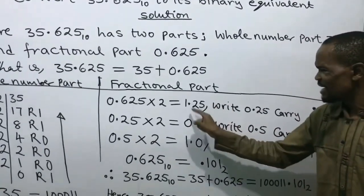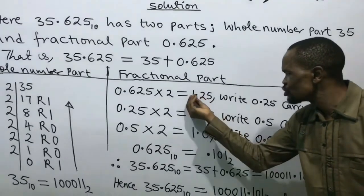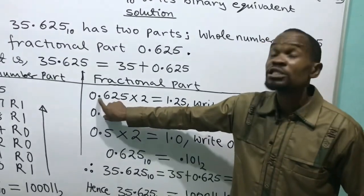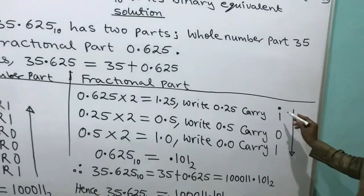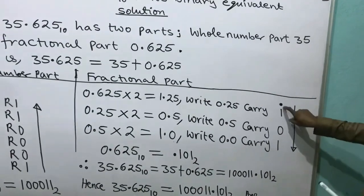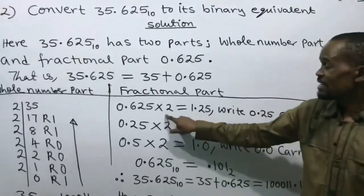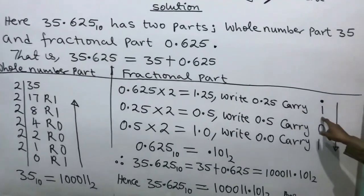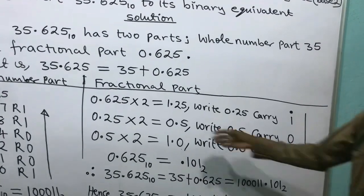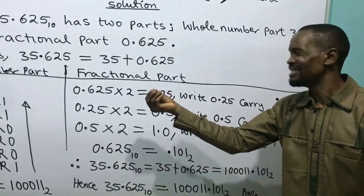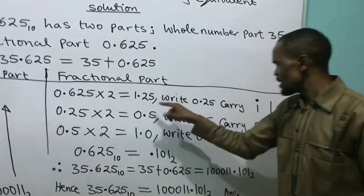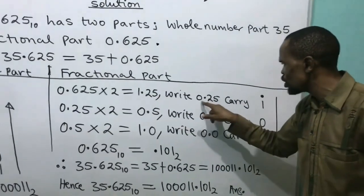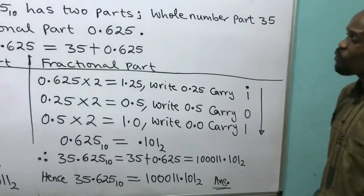That gives me 1.25. What am I interested in? The whole number part, which is 1. Before I take this whole number part out, I note there is a decimal point — a dot — which I put to mark the fraction. I carry the whole number part 1 and write it down. What remains after taking the 1 is 0.25, which becomes my next fractional part.